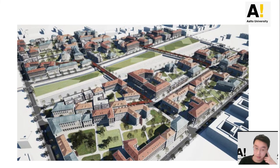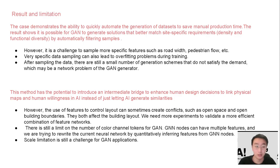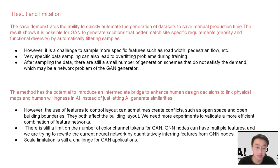Some key limitations: the data can also lead to overfitting problems during the training process. After simplifying the data, there are still a small number of generated solutions that do not satisfy demand, which may be a network problem of the GAN generator. Scale limitation is still a challenge for GAN applications in the urban design process. Finally, the use of features to control layout can sometimes create conflicts, such as between open space and open building boundaries — they both affect the building layout. We need more experiments to validate a more efficient combination of feature networks.